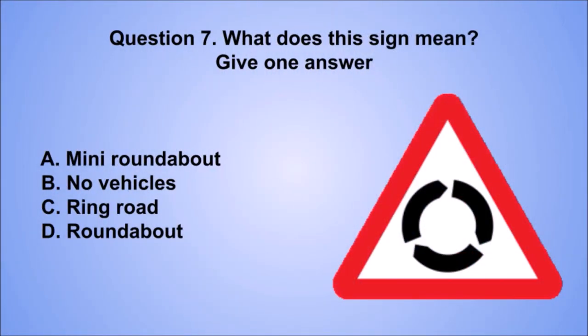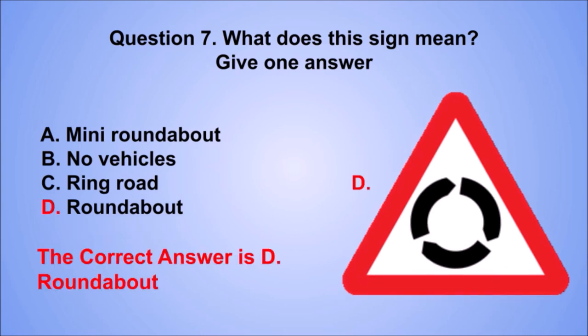Question 7. What does this sign mean? Give one answer. A: Mini roundabout. B: No vehicles. C: Ring road. D: Roundabout. The correct answer is D: Roundabout.